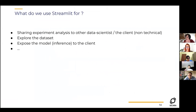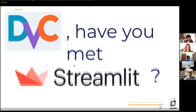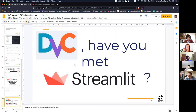We use Streamlit a lot to share analyses among data scientists, and to share experiment results with clients — sometimes non-technical people. We use it to explore datasets and to expose models. For example with computer vision, we build a form where you upload an image, it runs the model on that image, and shows you the result. Now I'm going to show what we can do with DVC and Streamlit together.